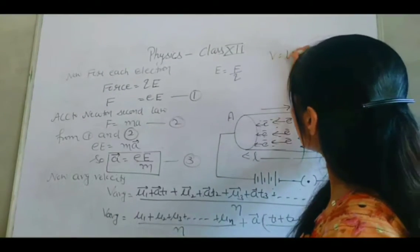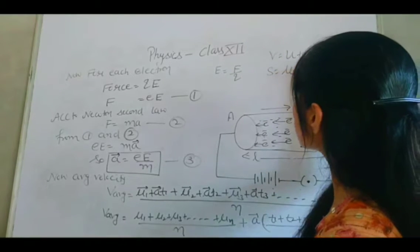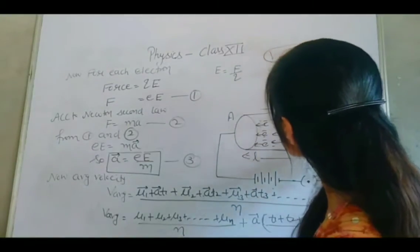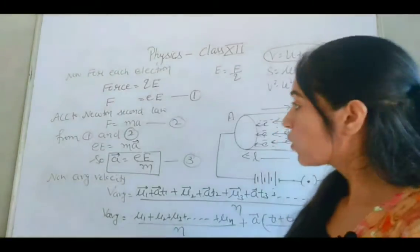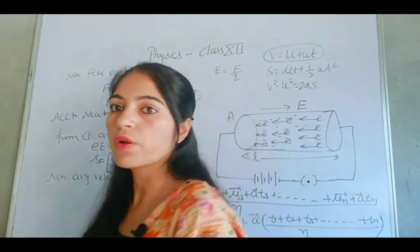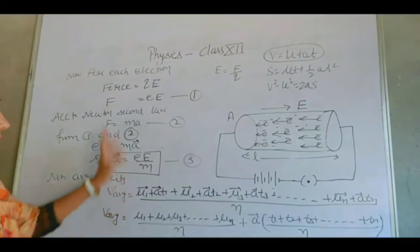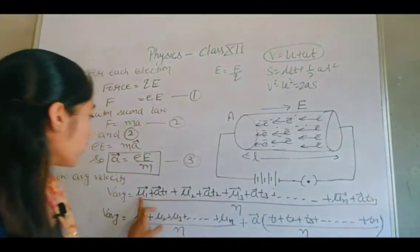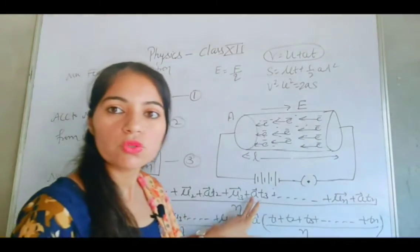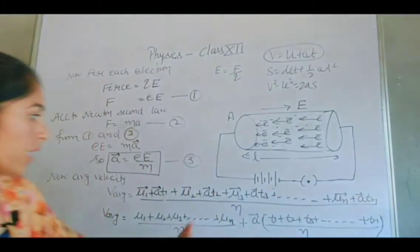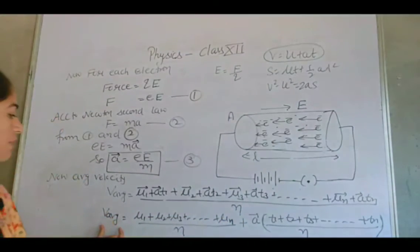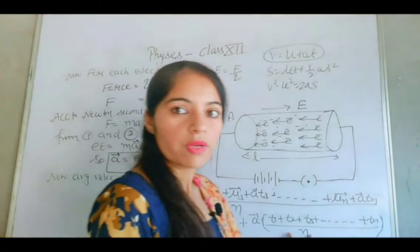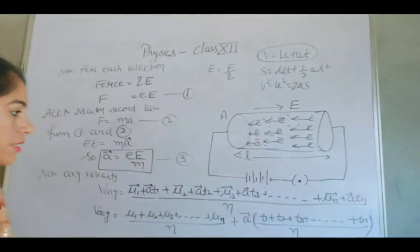From equations of motion, we use V equals u plus at. To find average final velocity: V average equals the sum of final velocities of all electrons divided by n. Each final velocity is ui plus a·ti, so V average equals (u1 plus u2 plus u3 ... plus un) divided by n, plus a into (t1 plus t2 plus t3 ... plus tn) divided by n.